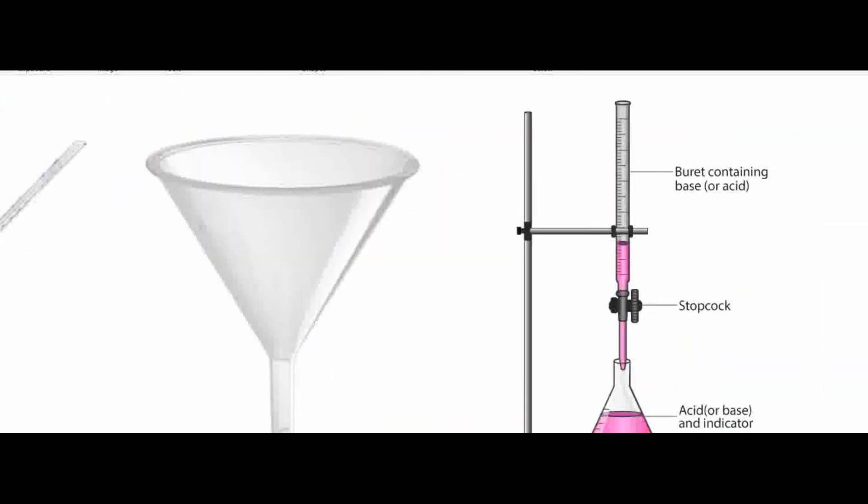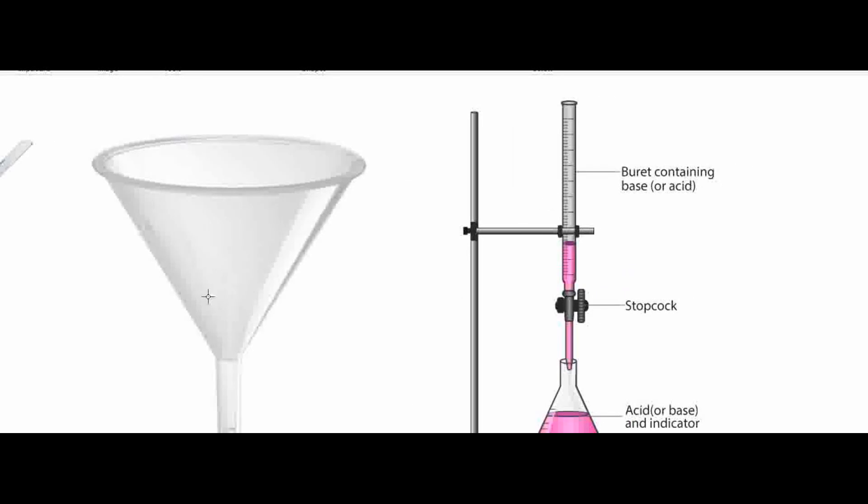We will place the acid in the burette and we would do that using a filter funnel. This will help to make sure that there's no spillage of the acid. You remove the filter funnel after you have placed in the acid because you don't want any excess acid dripping from the funnel and messing up the volume reading on the burette.